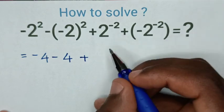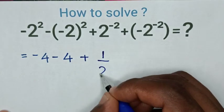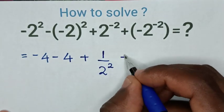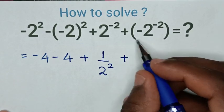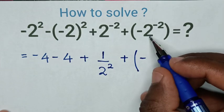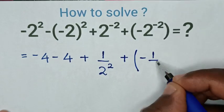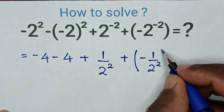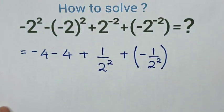2^(-2) is same as 1 over 2², then plus, from here inside the bracket, there is negative, then 2^(-2) is same as 1 over 2², then bracket.